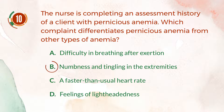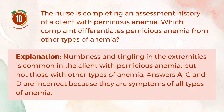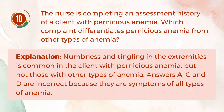The correct answer is B, numbness and tingling in the extremities. Explanation: Numbness and tingling in the extremities are common in the client with pernicious anemia, but not those with other types of anemia. Answers A, C, and D are incorrect because they are symptoms of all types of anemia.